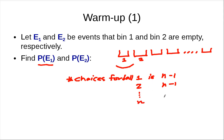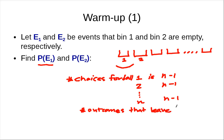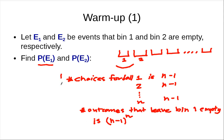For all the balls, they only have n minus 1 choices, and these choices are independent of each other. For each ball, regardless of what the previous ball did, there are exactly n minus 1 choices. So the number of outcomes that leave bin 1 empty is n minus 1 to the n. The size of the sample space is n to the n.